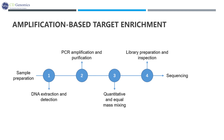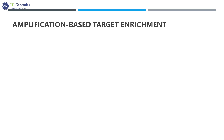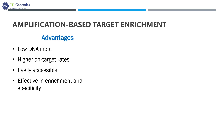In an amplicon-based target enrichment assay, genomic DNA is first fragmented by enzymatic or mechanical methods. The following steps involve amplification of the regions of interest using sequence-specific primers, where regions of interest could vary greatly among exons, rRNA, miRNA, and others. PCR runs in single or multiplex reactions, generating single or multiple amplicons. Amplicons representing each region of interest are pooled to create a library of fragments for sequencing. The amplicon-based approach requires low DNA input and has higher on-target rates, and is easily accessible and effective in enrichment and specificity.